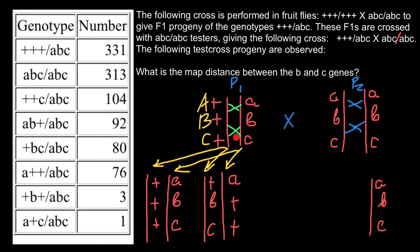If crossing over happens between genes B and C, the new recombinant chromosomes would be: plus, plus, small c and small a, small b, plus. So we list these two variants: plus, plus, small c and small a, small b, plus.